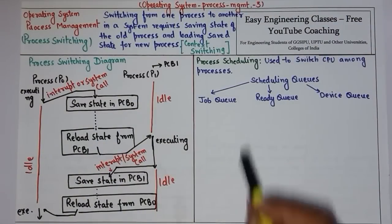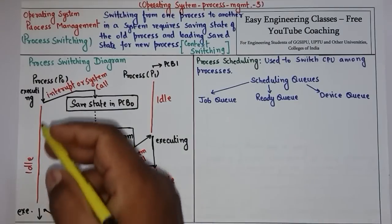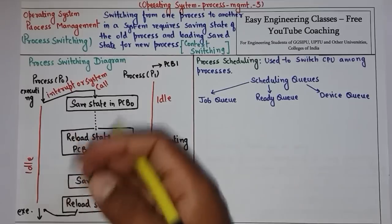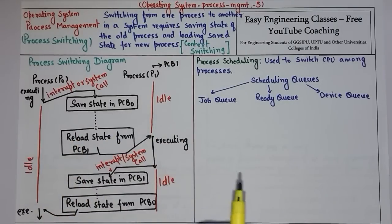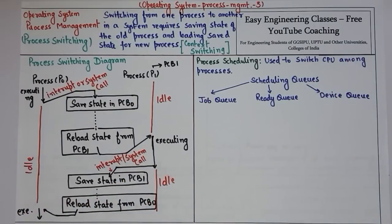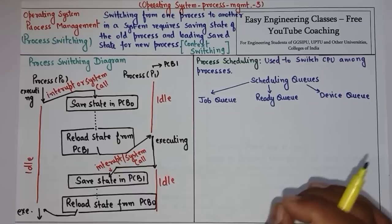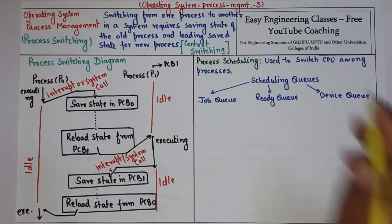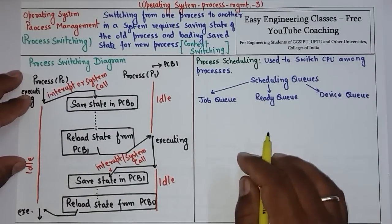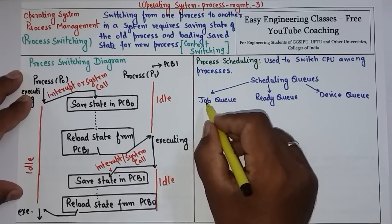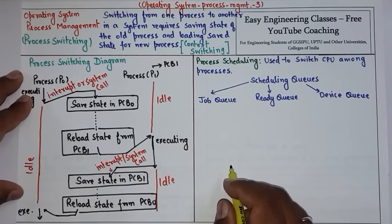The next topic is process scheduling. We have seen how a process switches from execution to idle state. There are scheduling algorithms used to pick a process from the ready state to the executing phase — that job is done by process scheduling. It is used to switch the CPU among processes. There are different kinds of scheduling queues: job queue, ready queue, and device queue.